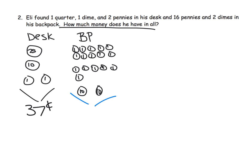And in his backpack, how much money does he have? Well, we have a group of 10 pennies here, plus a couple of 10 pennies down here. So that's going to be 10, 20, 30, plus these extra six. So he has 36 cents in his backpack.